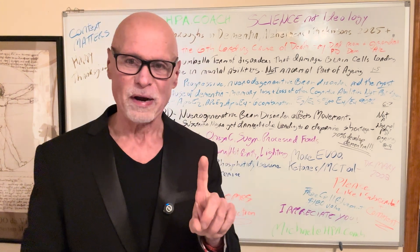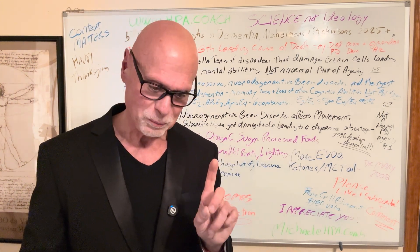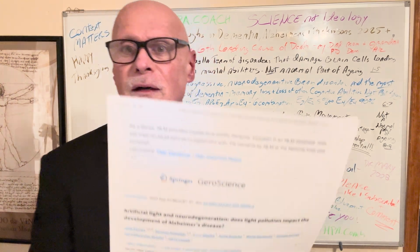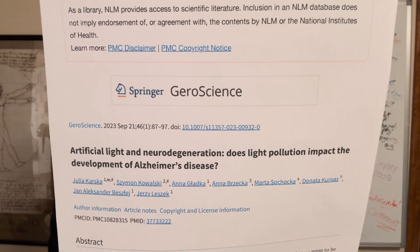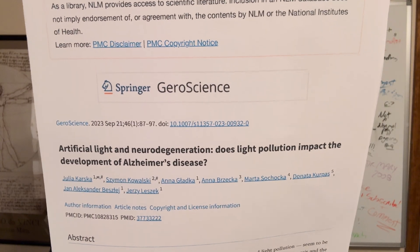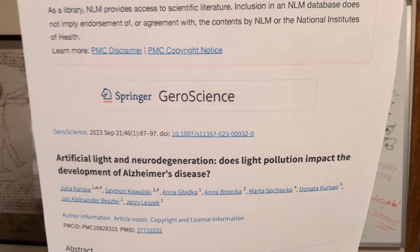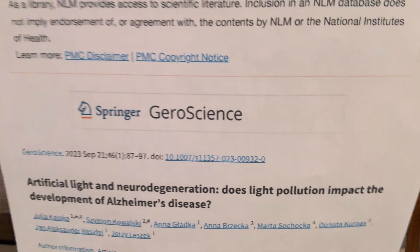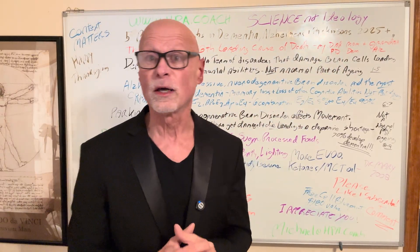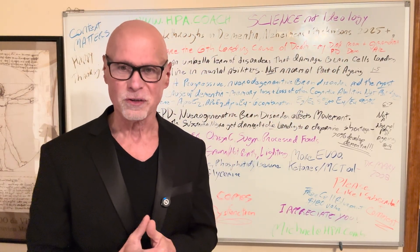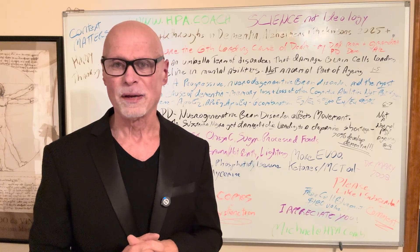This one surprised me. It may surprise you. I think it will. Artificial light and neurodegeneration. Does light pollution impact development of Alzheimer's disease? This is very interesting. They looked at all the blood biomarkers, and they found that artificial light had a major impact.